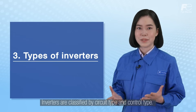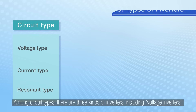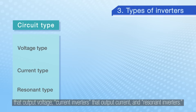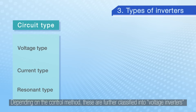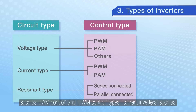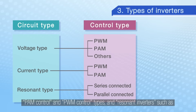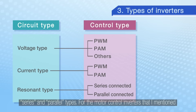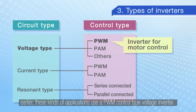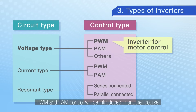Inverters are classified by circuit types and control types. Among circuit types, there are three kinds of inverters: voltage inverters that output voltage, current inverters that output current, and resonant inverters. Depending on the control method, these are further classified into voltage inverters such as PAM control and PWM control types, current inverters such as PAM control and PWM control types, and resonant inverters such as series and parallel types. For motor control inverters, these applications use a PWM control type voltage inverter. PWM and PAM control will be introduced in another course.